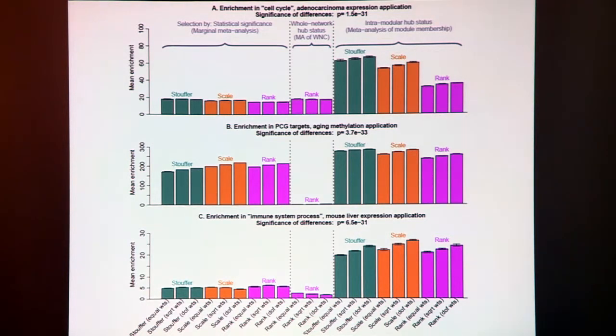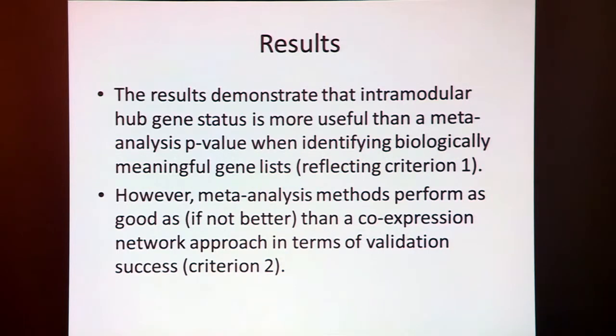Most recently, for example, Dan Geschwind's paper in Nature on autism. So if you want to learn biology, network methods are great. But biomarker discovery, I just don't feel comfortable making that claim based on these data.